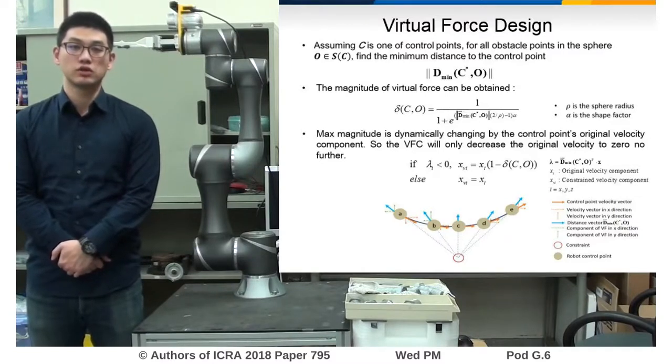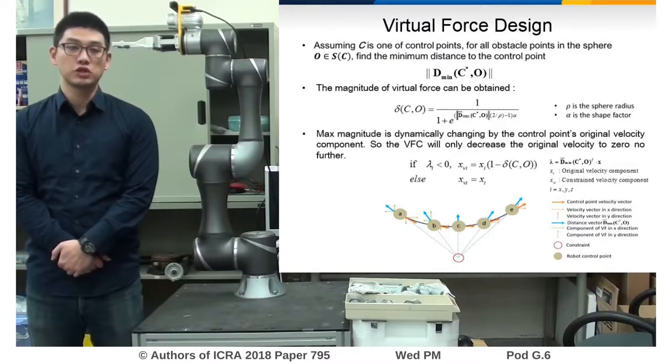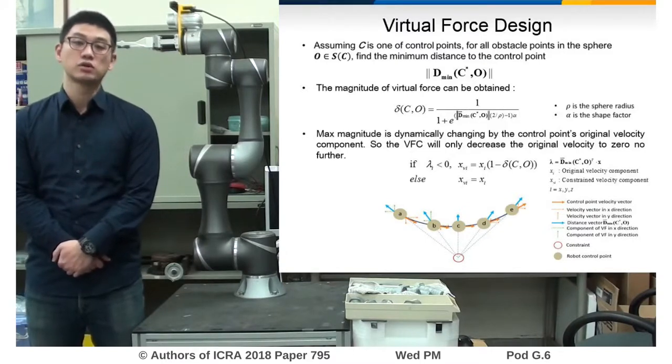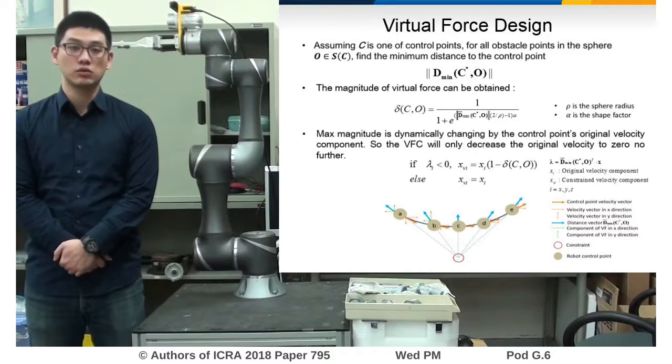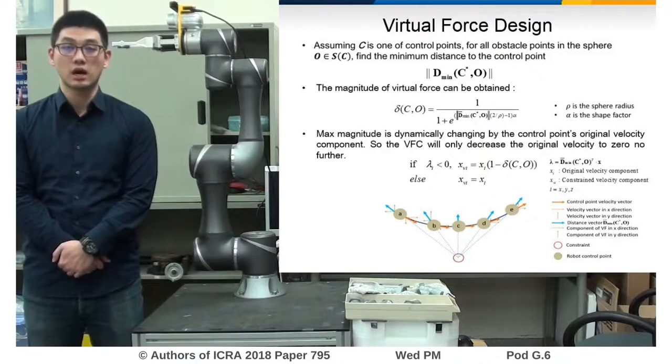The maximum magnitude of the virtual force is not constant, but changing by the critical control point's original velocity. The virtual force only generates opposite velocity to the critical control points if the direction component of the velocity is toward the obstacle.